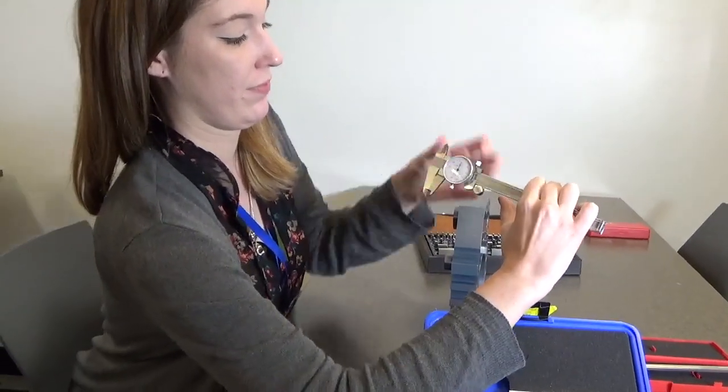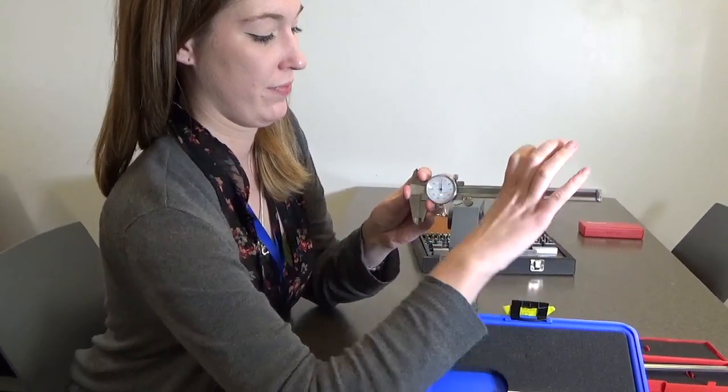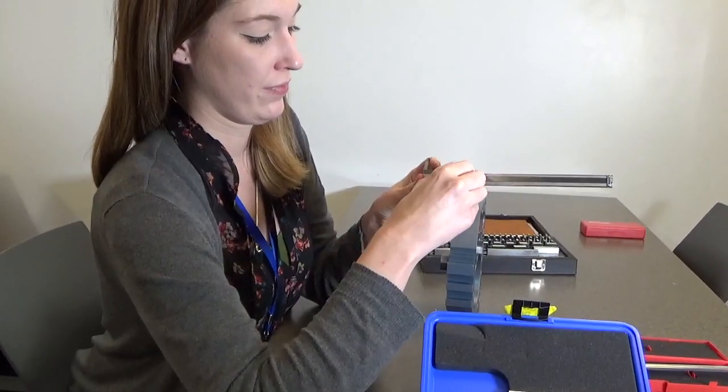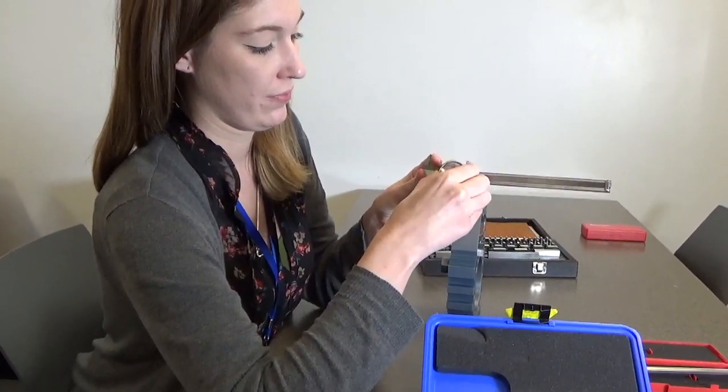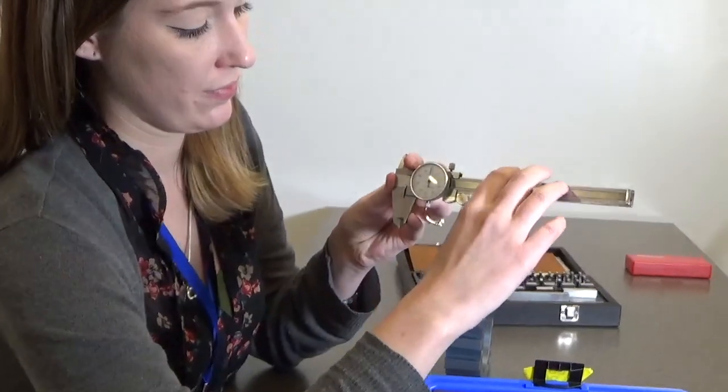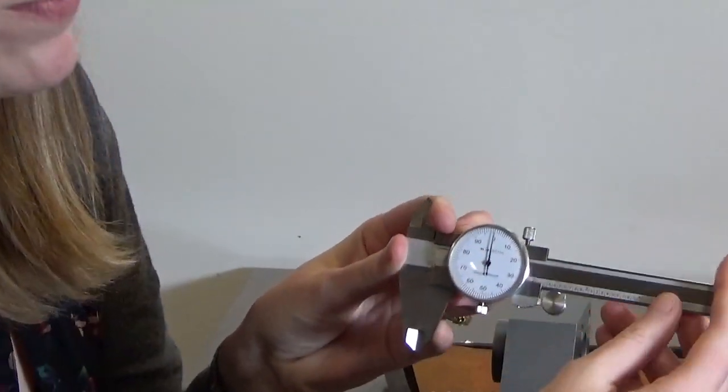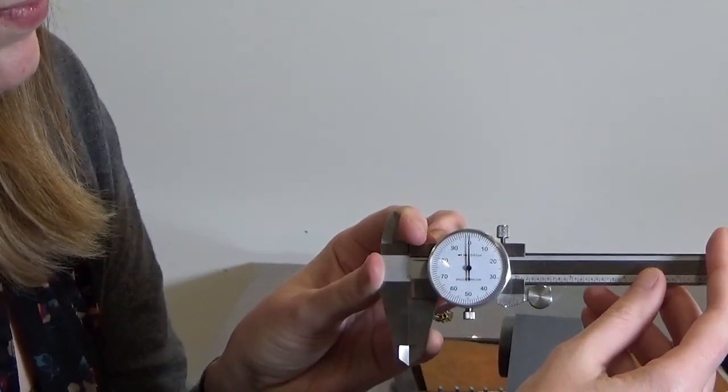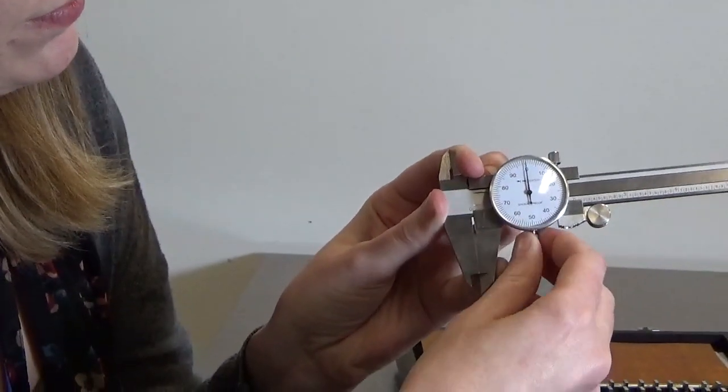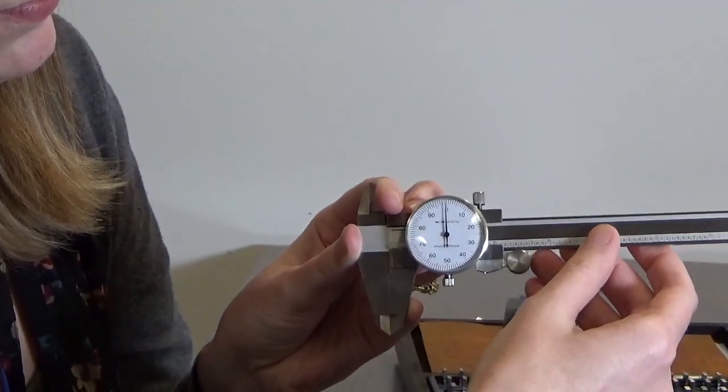She has opened the little set screw below the bezel and she's going to rotate the bezel here to set the zero so that the zero scale matches the pointer. Once she's got it in its correct position, she would tighten the set screw at the bottom. And we have our zero complete.